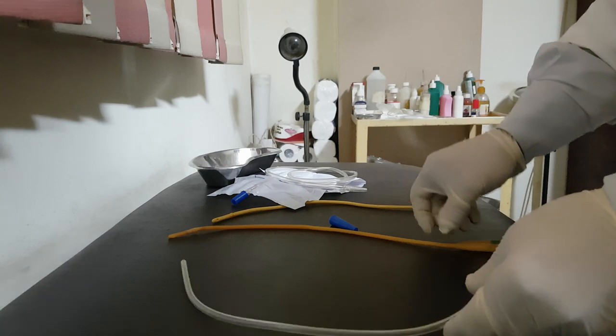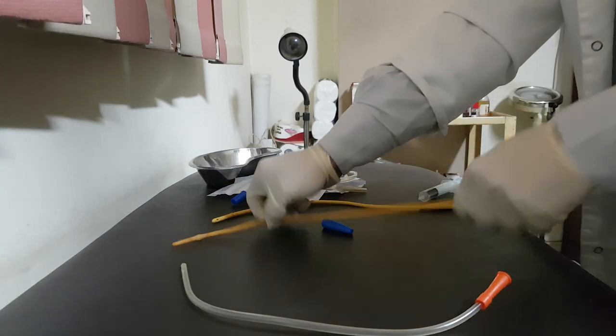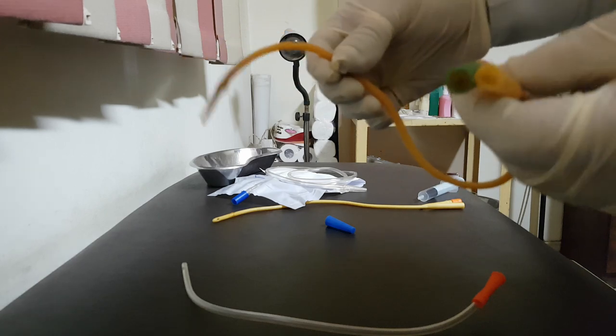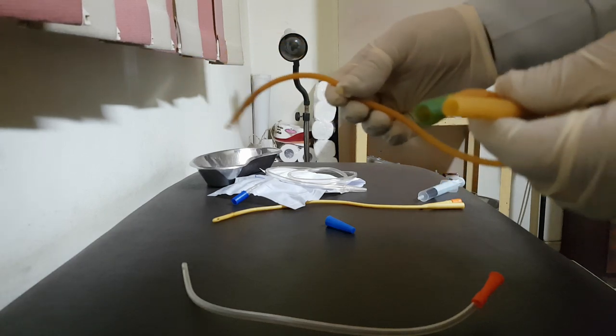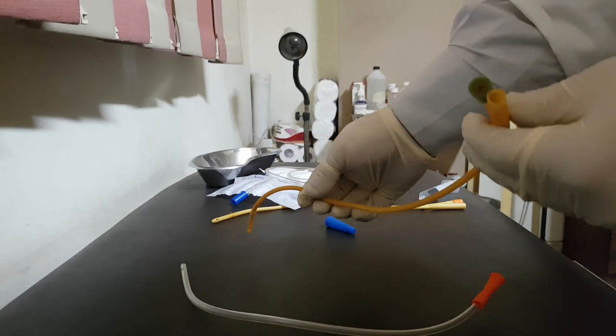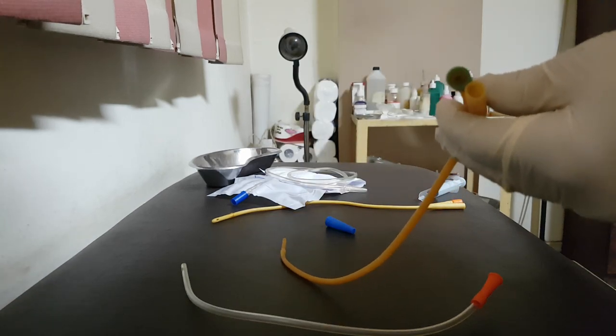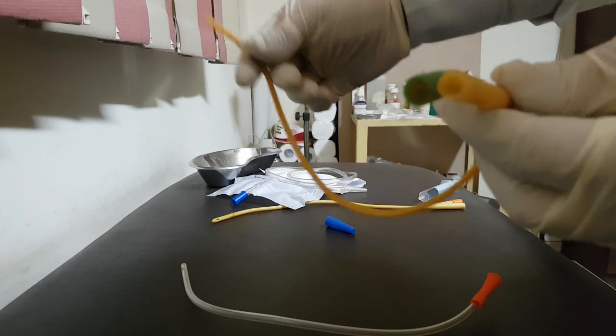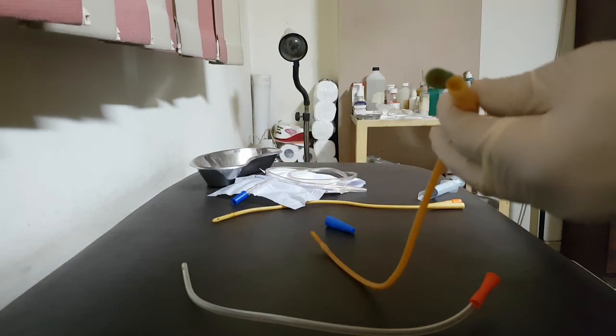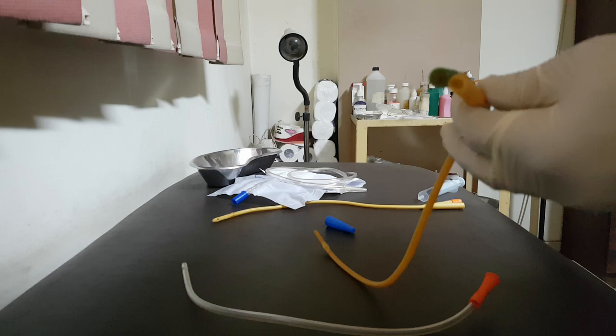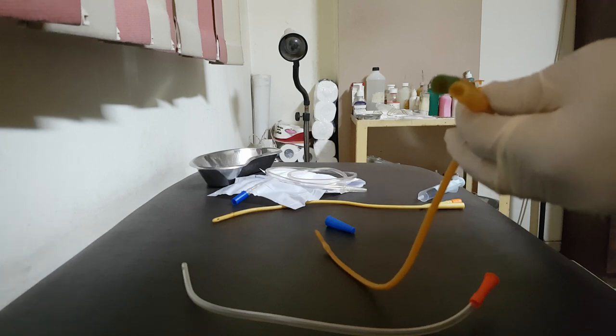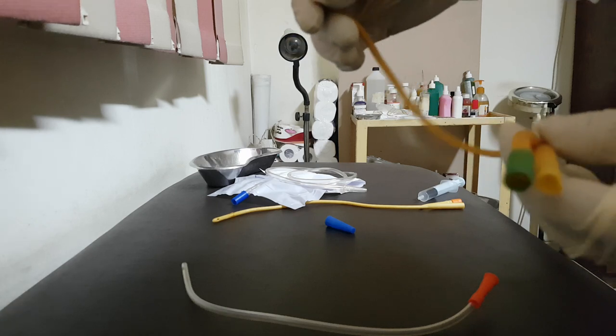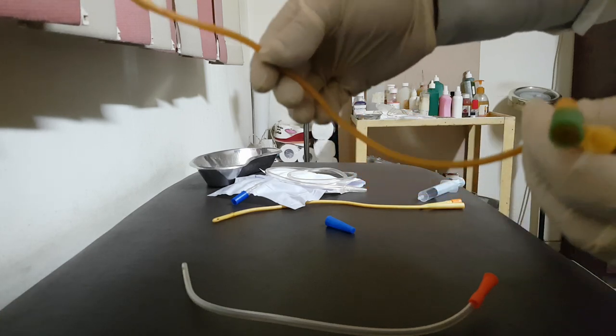This is what's called the intermittent catheter, Nelaton catheter. The other example is Foley catheter. Foley catheter, this is under the category of indwelling catheter. Indwelling catheter includes two main important items: either Foley catheter or silicone catheter or suprapubic catheter, which is inserted suprapubically through a minor surgery inside the bladder. But this Foley catheter is inserted through the urethra.